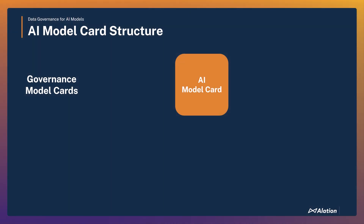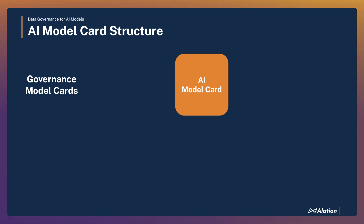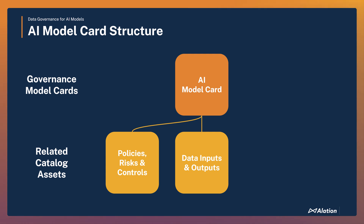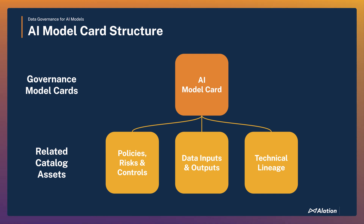Let's start by taking a look at how we use Alation's flexible document hub templates to create AI model cards. On these AI model cards we'll start capturing the who, what, where and how of each AI product in use across our organisation. Then we'll link our AI model card to related assets in our catalogue — such as policies, risks and controls — and importantly the data inputs and outputs for the model, and the lineage of those data inputs and outputs, so we can check the quality of the data being fed into our models and whether any sensitive data is involved.